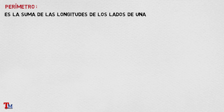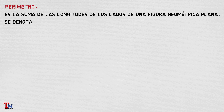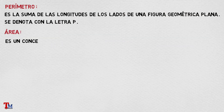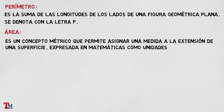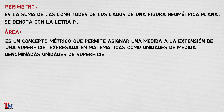Para comenzar, introduciremos primero lo que es el perímetro, que se define como la suma de las longitudes de los lados de una figura geométrica plana, y se denota con la letra P. En segundo lugar, introduciremos lo que es el área, que se define como un concepto métrico que permite asignar una medida a la extensión de una superficie, expresada en matemáticas como unidades de superficie, y se denota con la letra A.